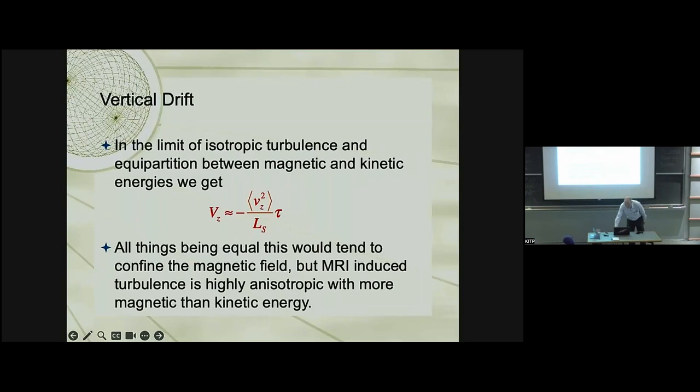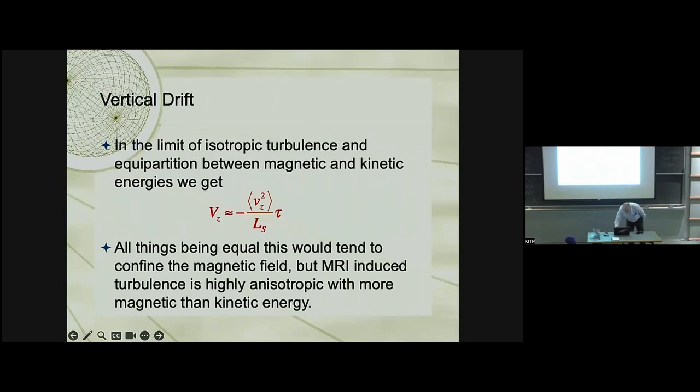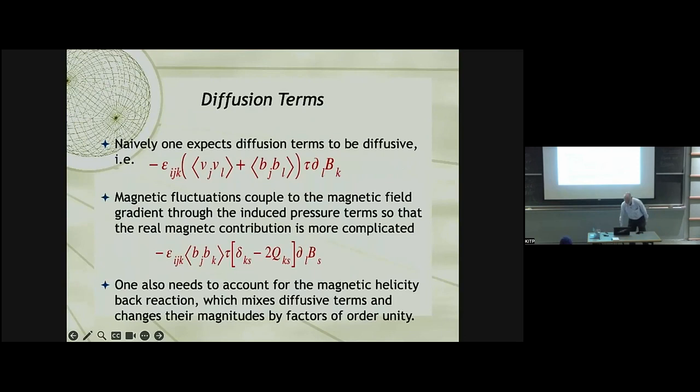In a disk, that would tend to weakly confine the field. But, the magnetorotational instability is highly anisotropic, and it's magnetically dominated. So, you'll get closer to the truth if you just ignore the velocity terms.